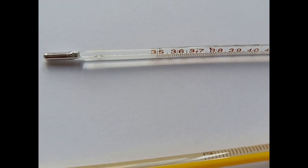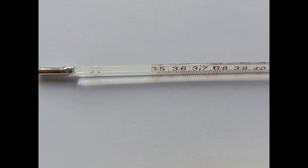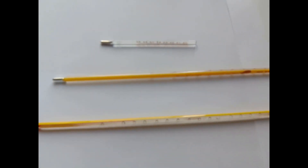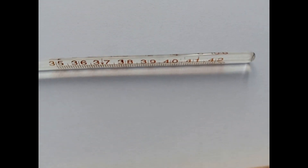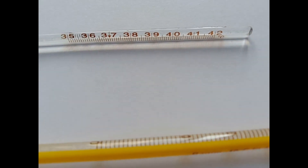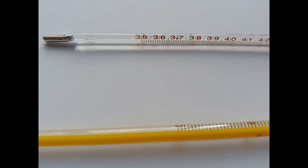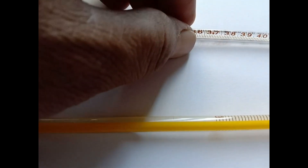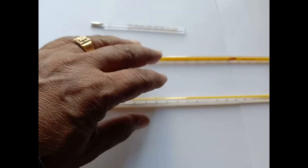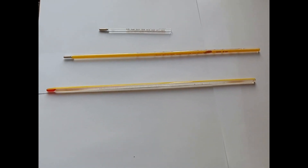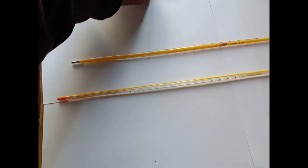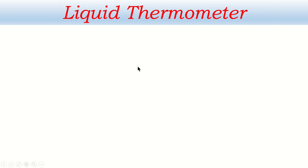Now I am showing another thermometer. Look at this — it is smaller than the previous two. This is a clinical thermometer and its range is very limited: 35 to 42 degrees Celsius only. It is filled with mercury. The smaller one is clinical, but the bigger one is a laboratory thermometer, or general thermometer. Now I want to classify liquid thermometers into different types.